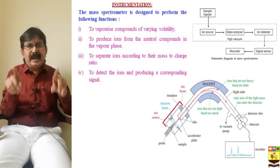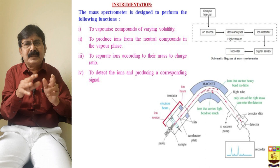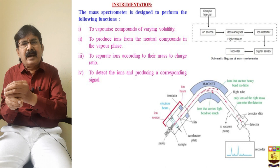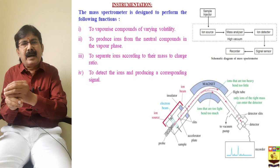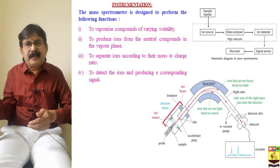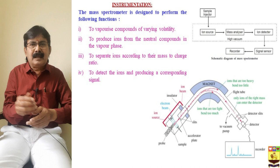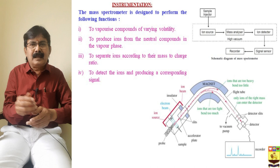We are injecting the sample using a syringe. In the ionic chamber we have a tungsten filament, and when we apply high voltage it produces electrons of high energy — 70 electron volts — that bombard on the molecules, forming the molecular cations. These come away from the ionic source into the field-free region, are subjected to the magnetic field, and depending upon the m/z ratio they are separated: heavier ions are deflected less, lighter ions are deflected more.